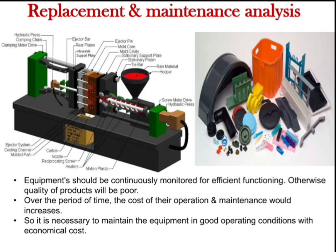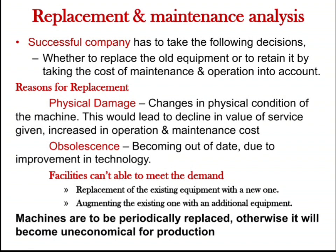To ensure perfect functioning of the machine, we have to maintain it properly, otherwise we will not get better quality products. For example, when a person purchases a new two-wheeler, at the initial stage it will give better mileage and the maintenance cost will be very low. Over the period of time, after five years, the mileage gets reduced and the service and maintenance cost also increases. This is because the mechanical components get worn out due to friction caused by relative motion between parts.